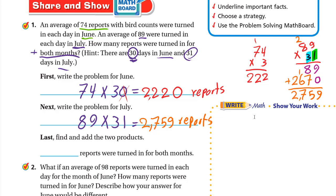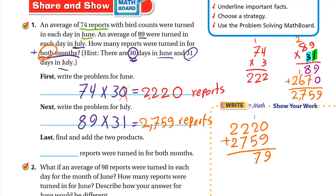Now add the two products for both months: 2,220 plus 2,759. 0 plus 9 is 9; 2 plus 5 is 7; 2 plus 7 is 9; 2 plus 2 is 4. So 4,979 reports were turned in for both months. Hope you enjoyed this lesson — have a nice day and goodbye!